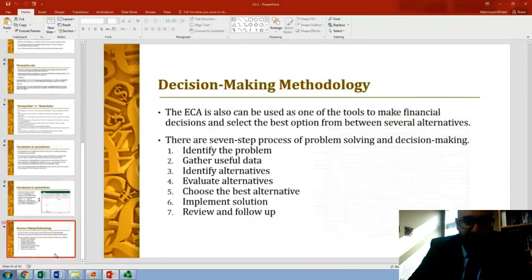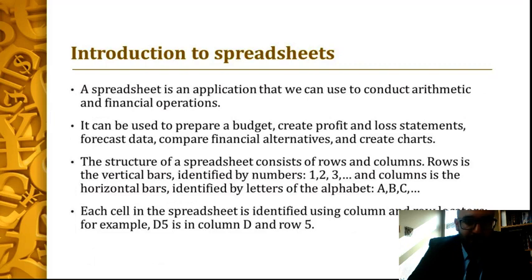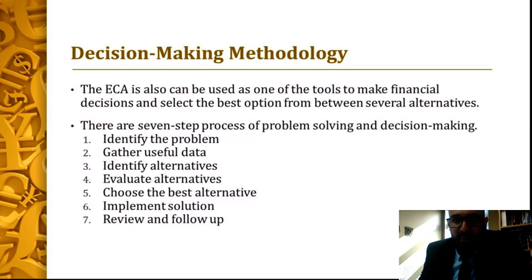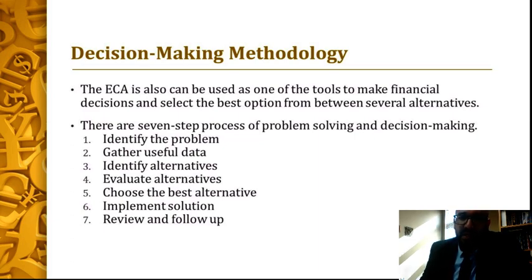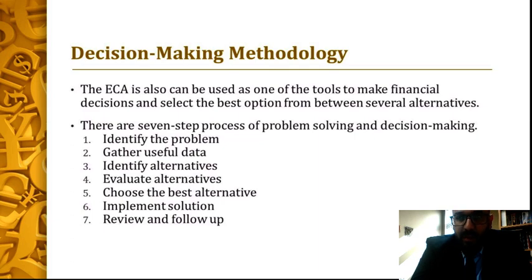Now we're moving to the last topic in this chapter: the decision-making methodology. There are seven steps to make a decision. Economics and Cost Analysis is used as one of the tools to make financial decisions. This entire class is about making financial decisions and selecting the best option among different alternatives.